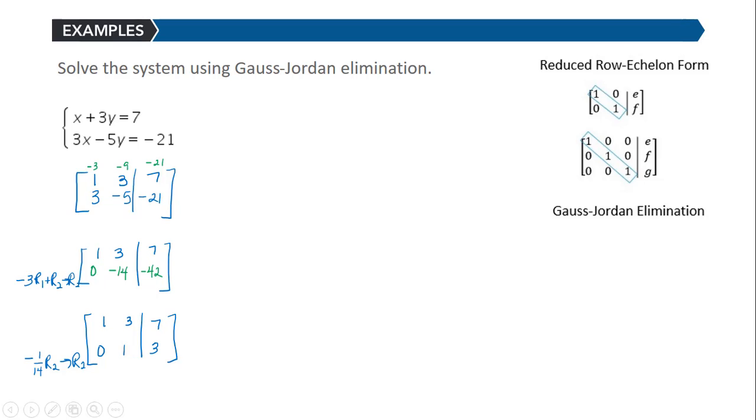So if I was doing just Gaussian elimination, I could be done. But since I'm doing Gauss-Jordan, I need to get a 0 above that 1. So to get a 0 in the second column of the first row, I'm going to have to add negative 3 to it.